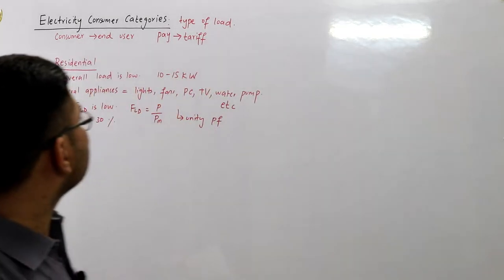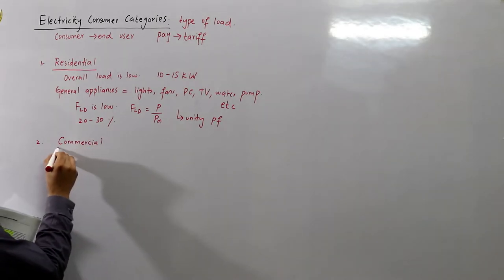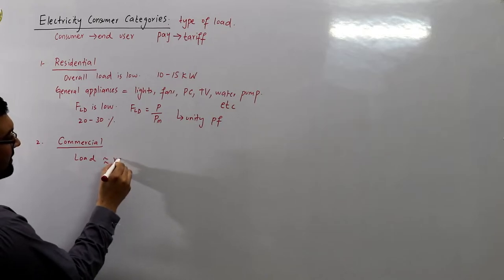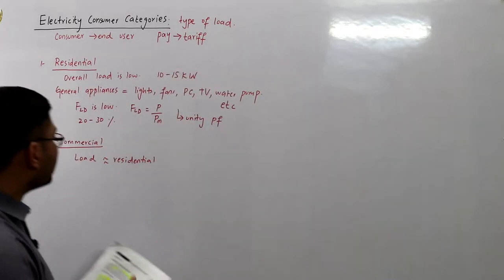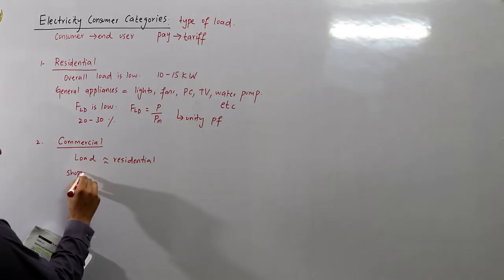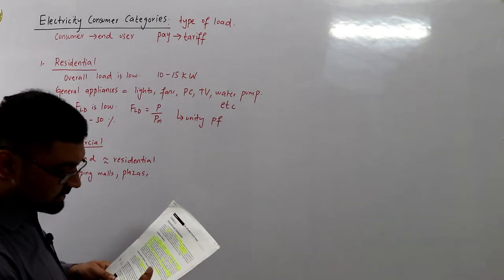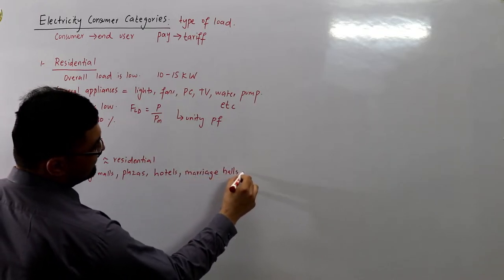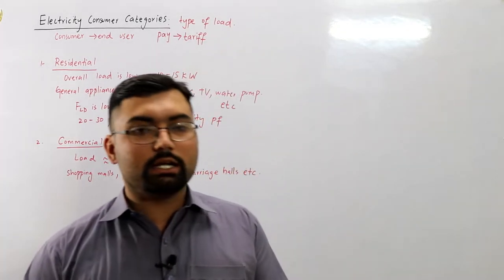The second category is commercial loads. The overall load is about the same as residential, maybe a little higher, but the load factor is relatively higher. This includes organizations operating on a commercial basis: shopping malls, plazas, hotels, restaurants, marriage halls, private hostels, etc.